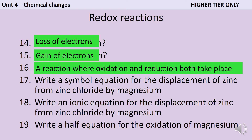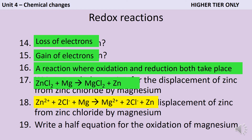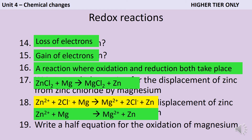The simple equation for the displacement of zinc from zinc chloride by magnesium can be turned into an ionic equation by removing the spectator ions. We split the compounds into individual ions: zinc chloride becomes Zn²⁺ and Cl⁻ ions, and magnesium chloride becomes Mg²⁺ and Cl⁻ ions. The chloride ions cancel each other out, giving the ionic equation: Zn²⁺ + Mg → Mg²⁺ + Zn. The half equation for the oxidation of magnesium shows it losing electrons: Mg → Mg²⁺ + 2e⁻. You can check this is right because the charges balance on both sides.